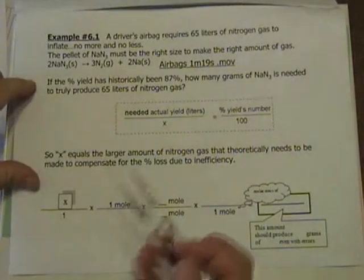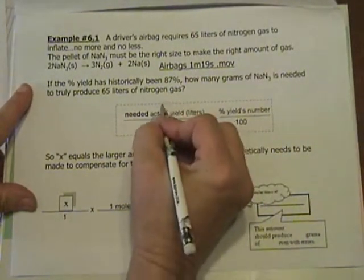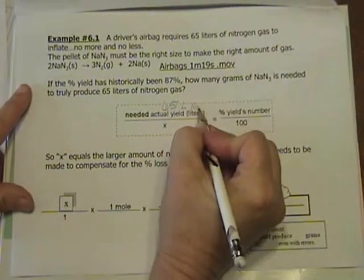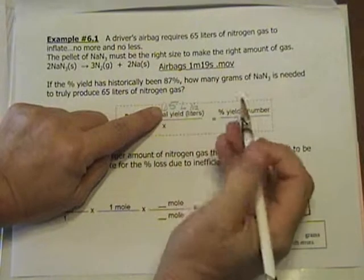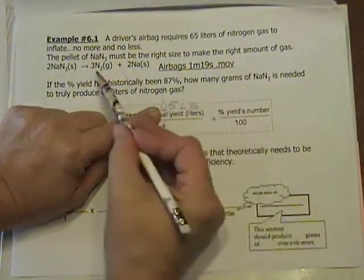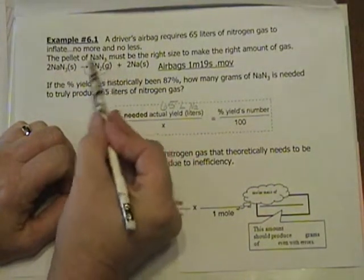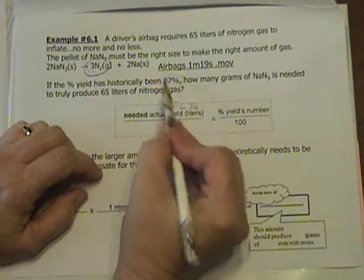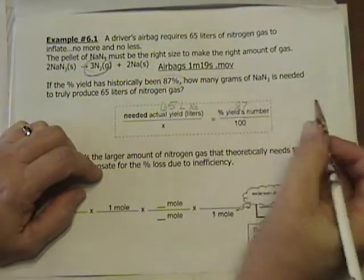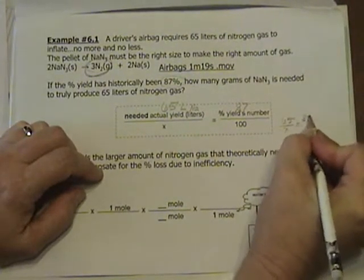How much extra do you need to make in order to accomplish your goal? It says a driver's airbag needs 65 liters, so that's our needed amount of nitrogen gas that we really do need for an airbag in a car for safety reasons. But the reaction at the factory that would take this pellet to make the nitrogen gas for the airbag has only been 87% good at it. So we would put 87 here.